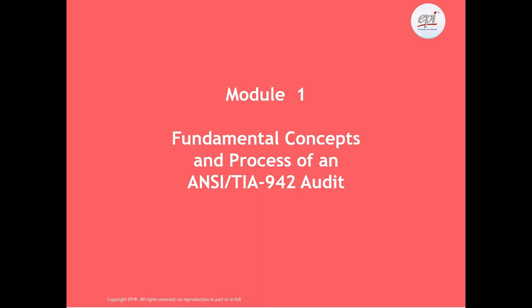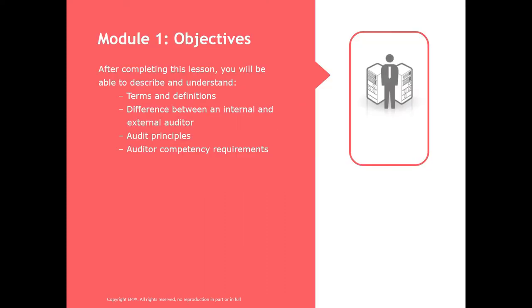Let's look at Module 1: the fundamental concepts and process of conducting an ANSI TIA 942 audit. During Module 1, we will look at the following items. You should be able to describe and understand the terms and definitions used in auditing, understand the differences between an internal auditor and an external auditor, look at the various audit principles that we should follow and implement, and look at the competency level requirements of an auditor.